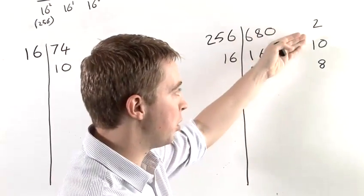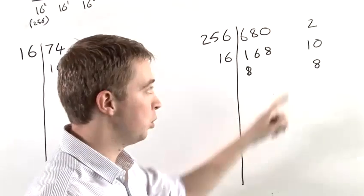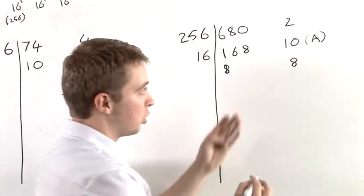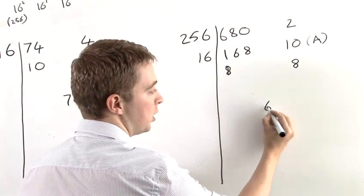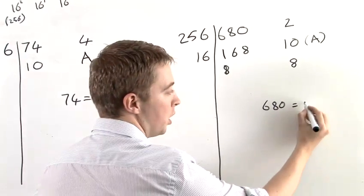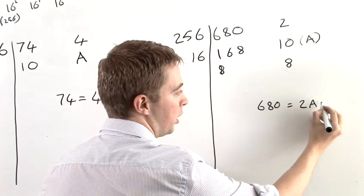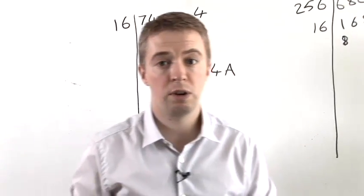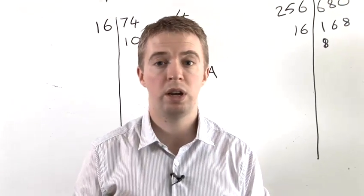So, now we have the three digits in our hexadecimal number. You'll notice again we have 10, which is represented by A. This tells us that 680, when written as a hexadecimal number, is 2A8, and that is how to convert a decimal number into a hexadecimal number.